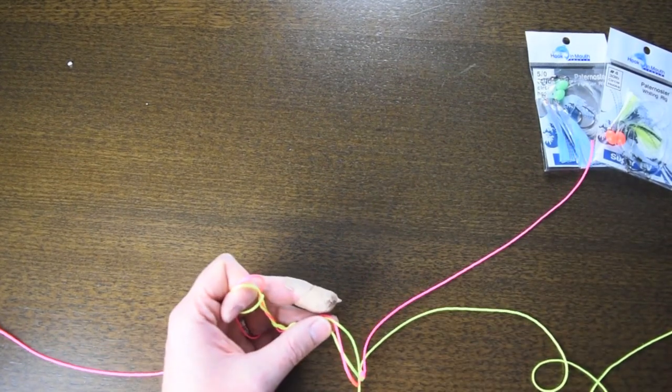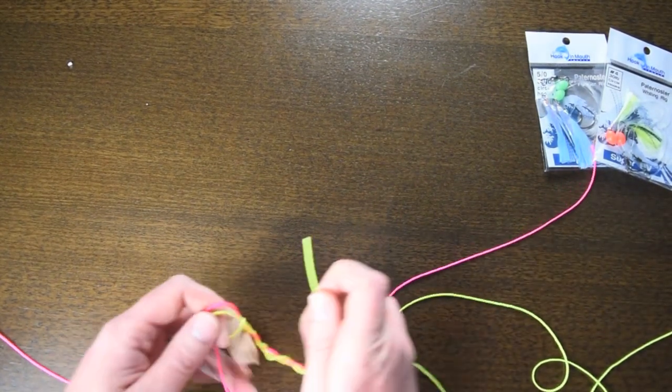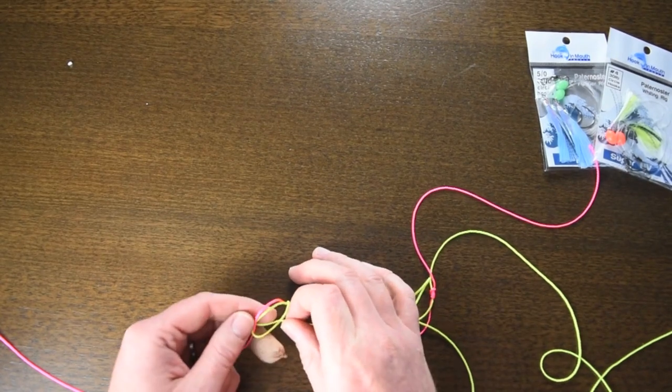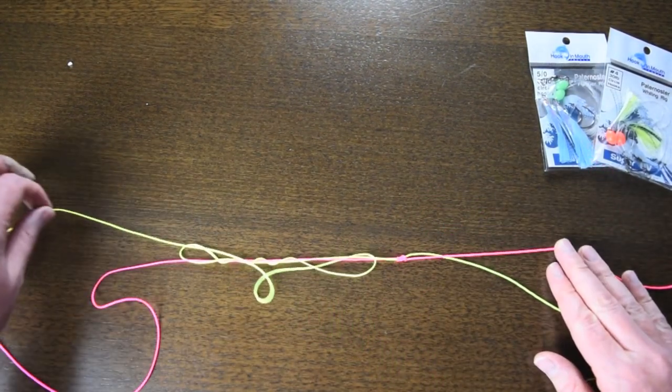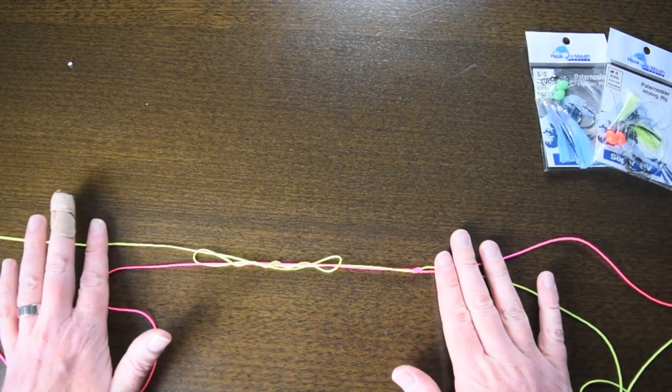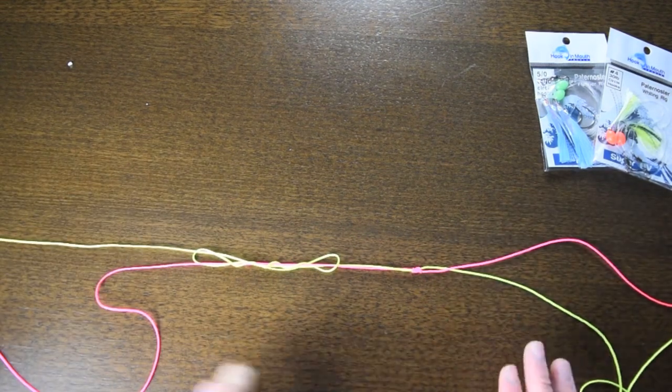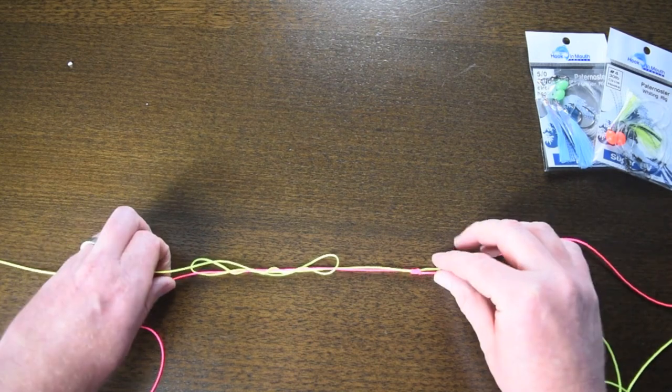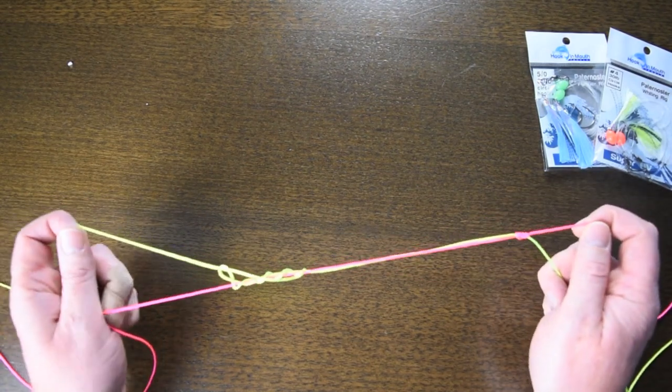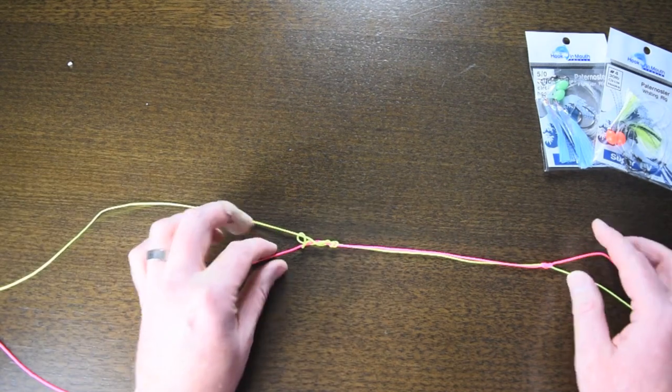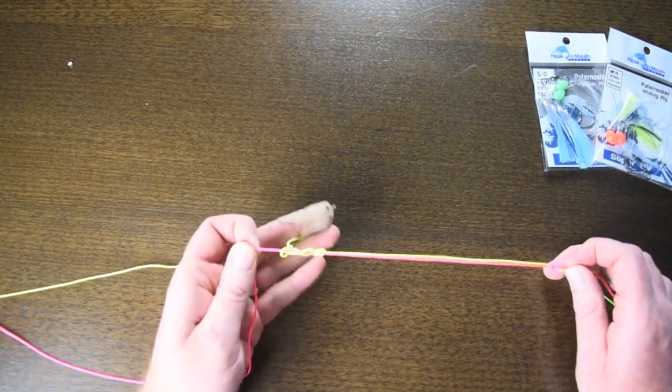This time we're going to come back up and go back through the loop we just made. Okay there we go. Just pull that tight a little bit. Now essentially we're going to have the same thing as what we did before. Now we're just going to pull that tight on all four tabs. Start to form that knot. Remember you would lubricate it.